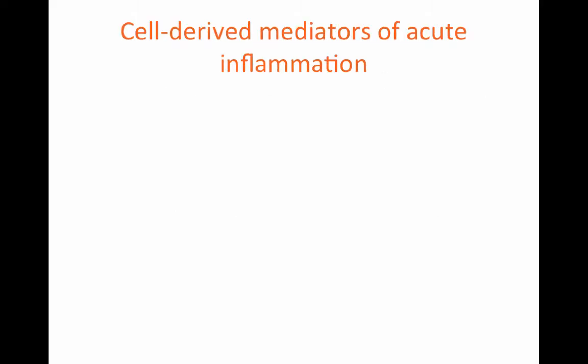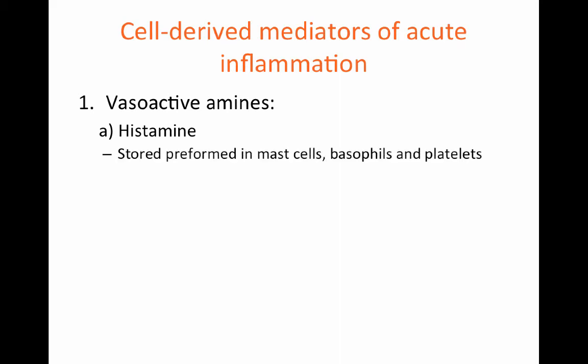Acute inflammation is characterized by cell-derived and plasma-derived mediators. First, we are going to talk about the cell-derived mediators, which include vasoactive amines such as histamine, which is stored preformed in mast cells, basophils, and platelets.